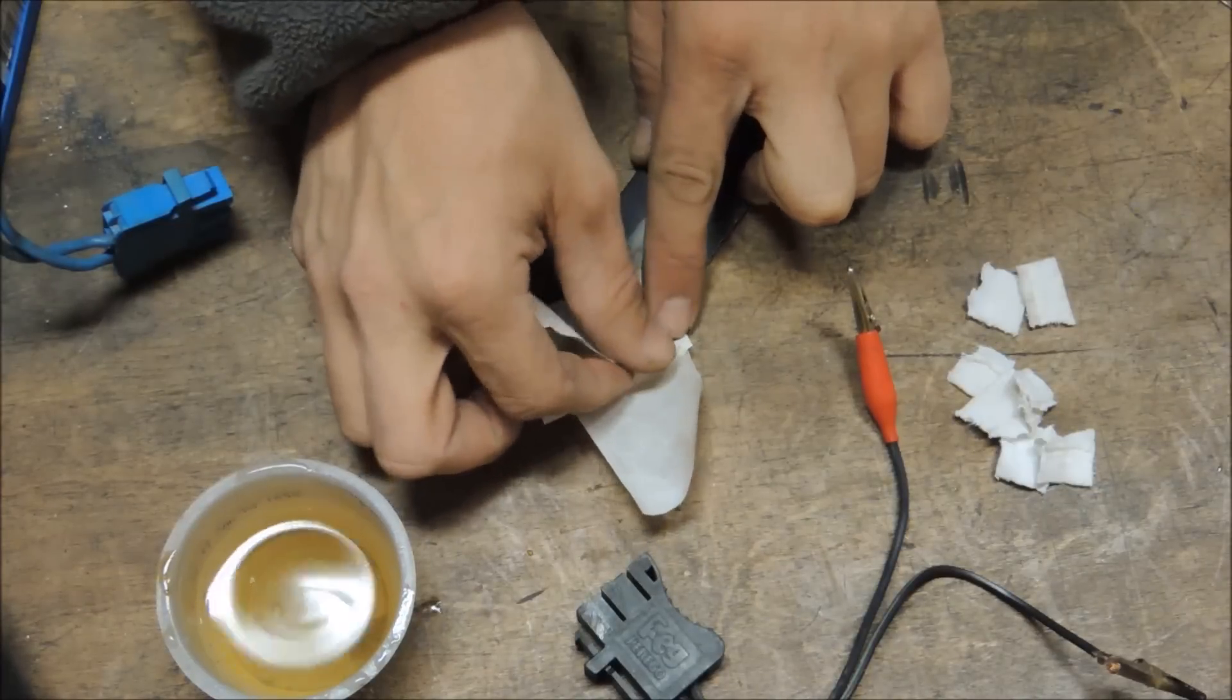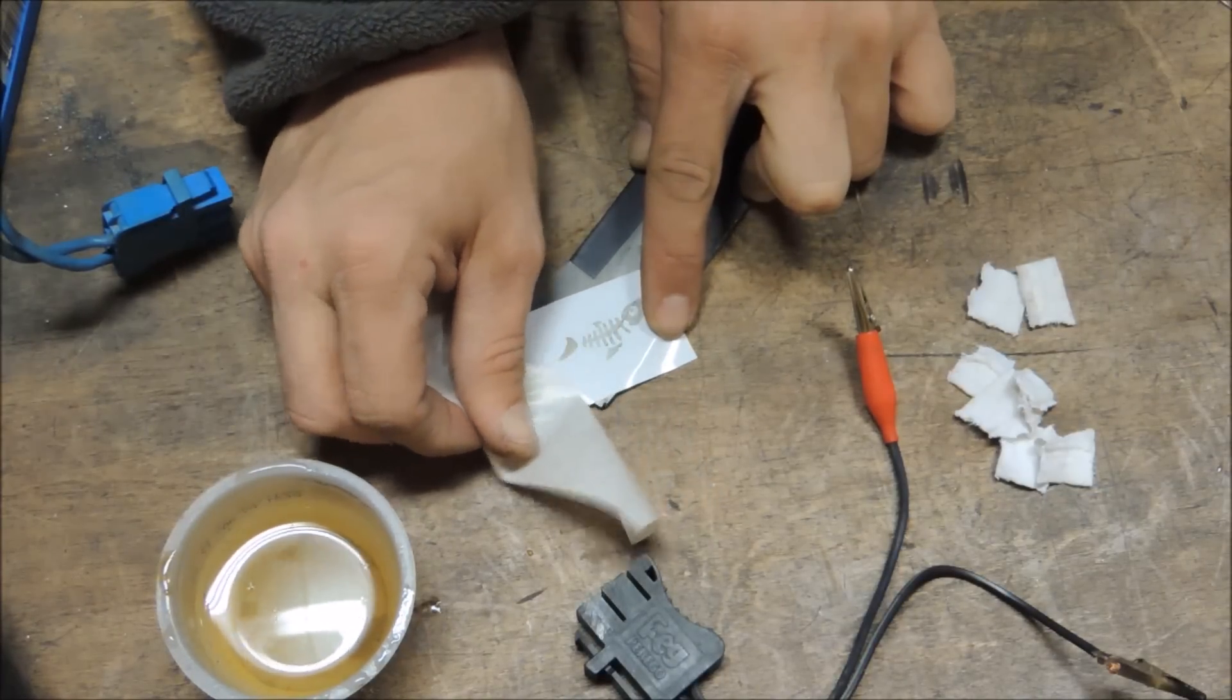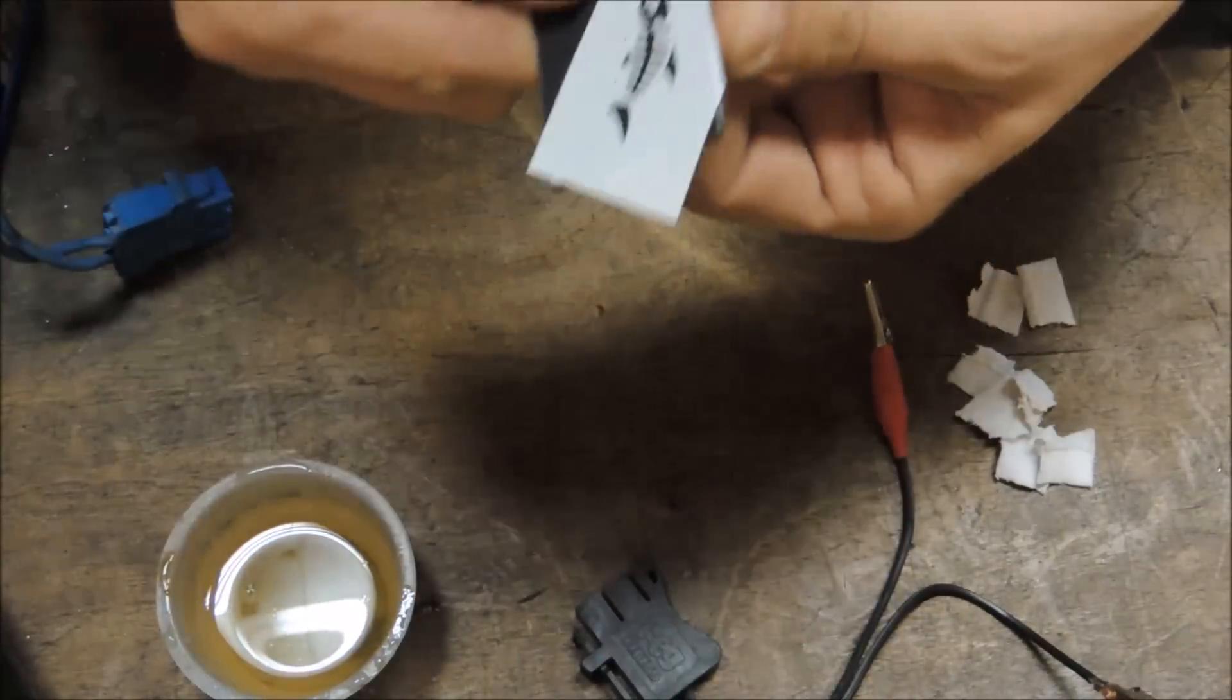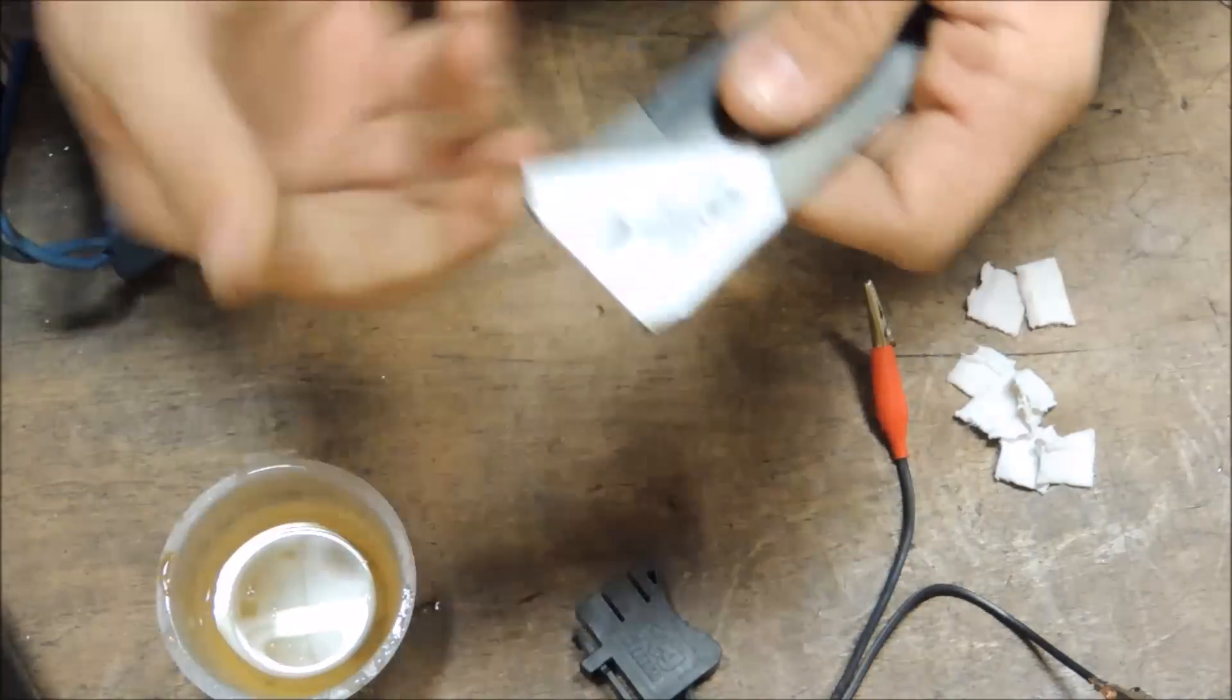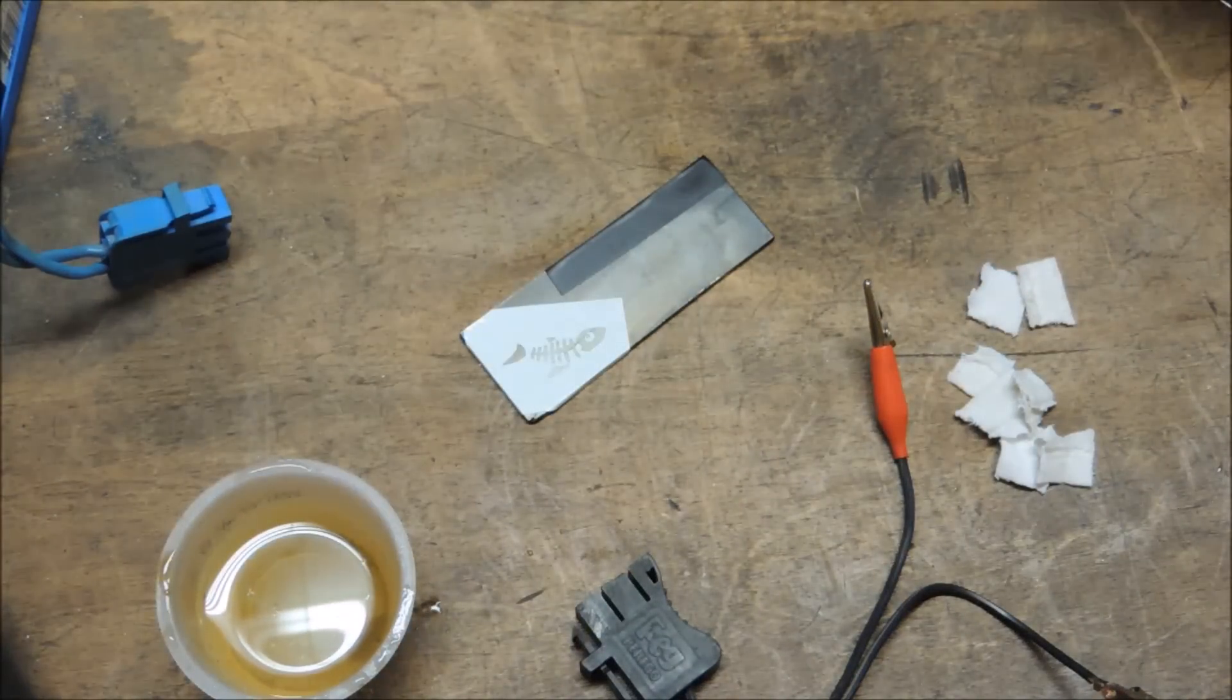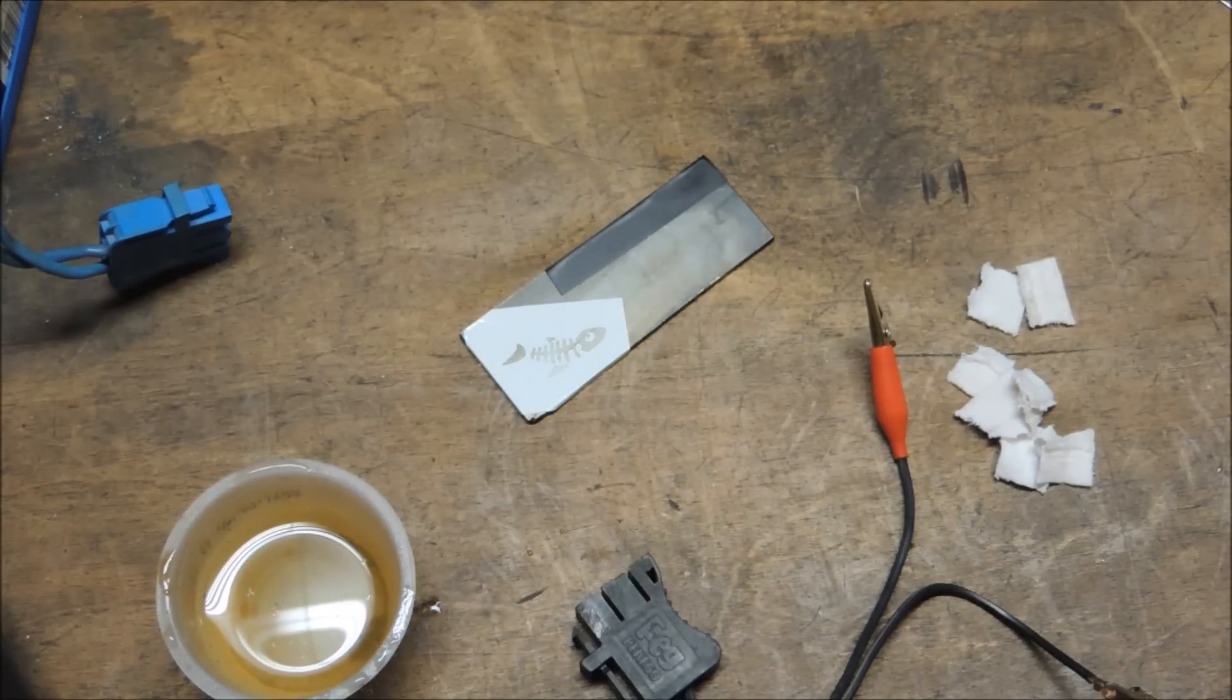Peel this back. And then I'm just going to pull these sides down like this real quick. Alright. So basically, there is our stencil.